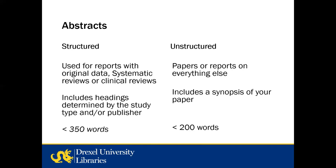The title is followed by an abstract, which can be on the title page or start on the second page. Center and boldface the word 'abstract.' Abstracts can be structured or unstructured. Structured abstracts are typically used for reports with original data, systematic reviews, or clinical reviews. They don't always have headers, but typically include headings covering the study objective or importance, study design and methods, primary results, and principal conclusions. The heading style will be based on what the publisher requests.